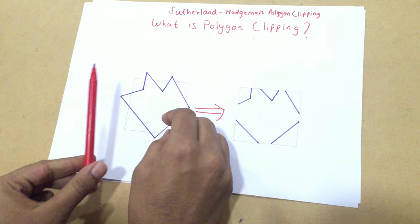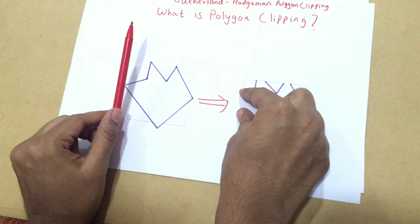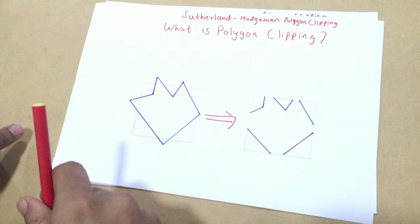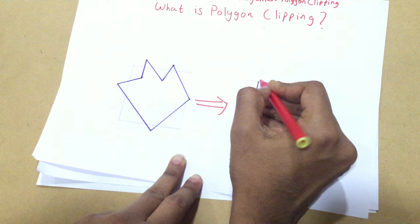Assume that this is my window and I have left-clipped it. So this region disappears and only this region remains, and I haven't highlighted the line between these two points. Hence my polygon becomes open. Thus we need to modify our polygon clipping algorithm, because if our polygon clipping algorithm was complete, these points would have been joined since a polygon is always complete.